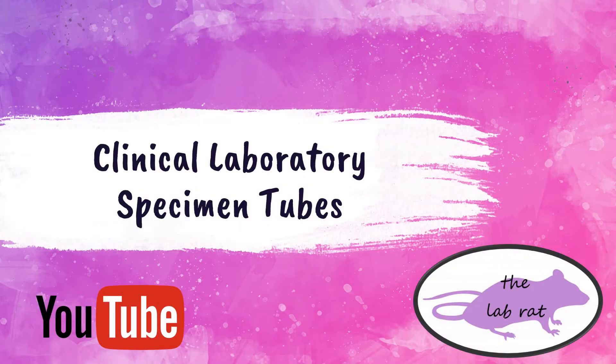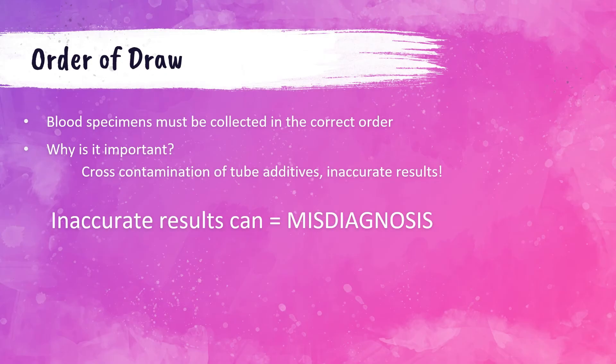We're going to be talking about the blood specimens that are collected for testing in the clinical lab. There are a variety of colored tubes and each have different additives in them, and because of that each one has a different purpose. One of the most critical things in the pre-analytical phase of testing is the specimen order of draw. The different colored tubes must be collected in the correct order, so phlebotomists and medical technologists absolutely need to know this.